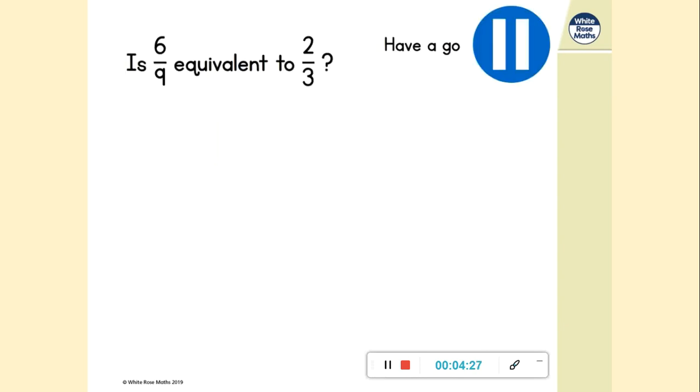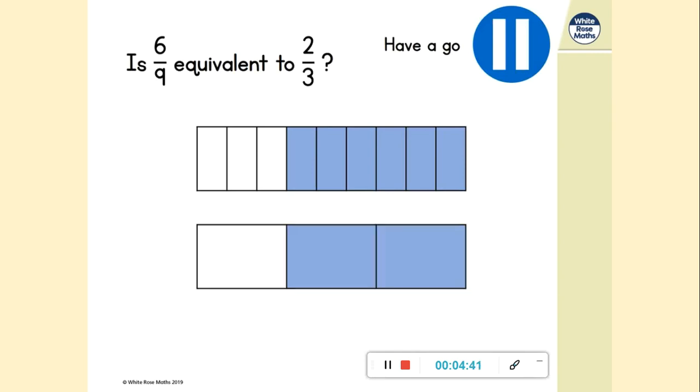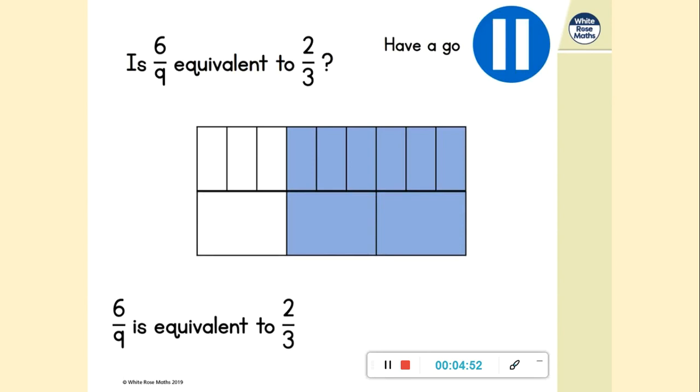You have a go at answering that question. Is six ninths equivalent to two thirds? There's a drawing of six ninths. Hopefully you drew that and shaded in six of the pieces. Then you drew two thirds and the total length of your bar was the same for both. Push them together. Yes, six ninths is equivalent to two thirds, which means two thirds is equivalent to six ninths. Again, think about that relationship between the numerators, two and six, and the denominators, three and nine. Possibly think about your multiplication tables as you're trying to spot these patterns.